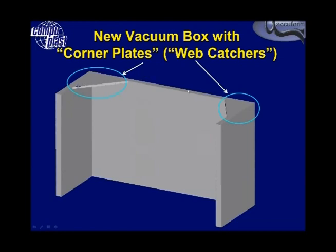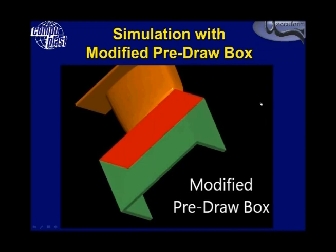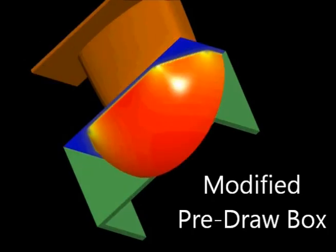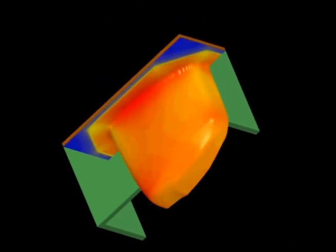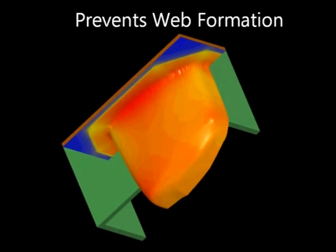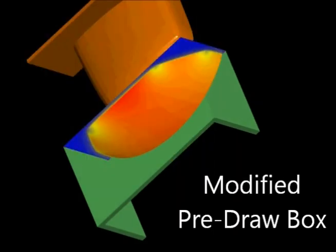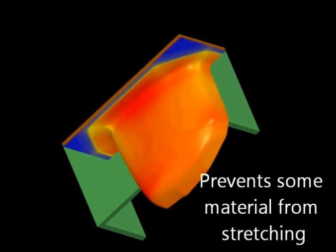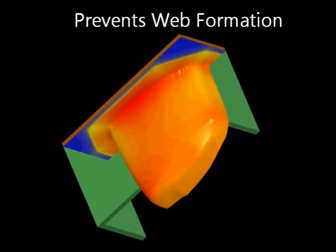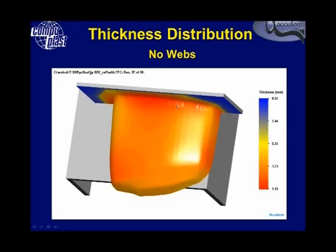The solution here was to add web catchers — simply plates in the corners that prevented material from forming into the vacuum box. In this simulation result, the blue area represents material that can't move, and when the material forms back there is no excess material in this region to form the web, resulting in a relatively uniform part.